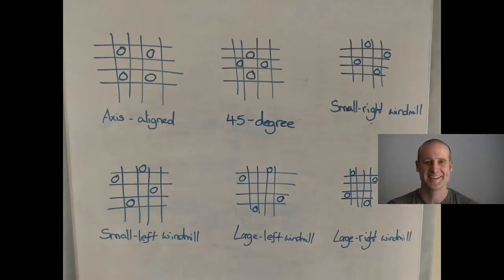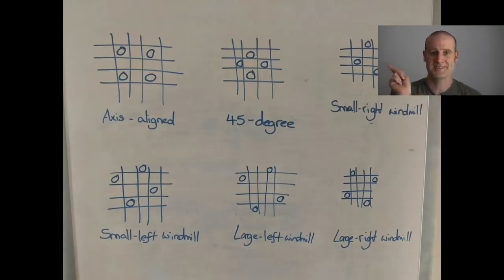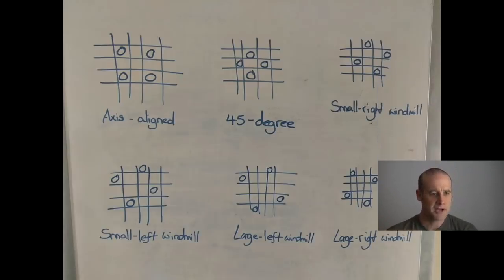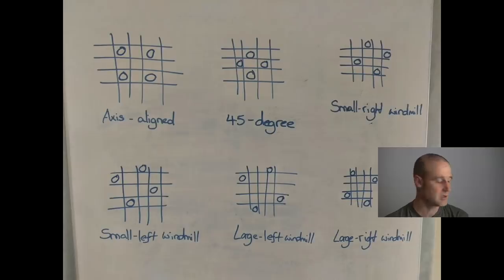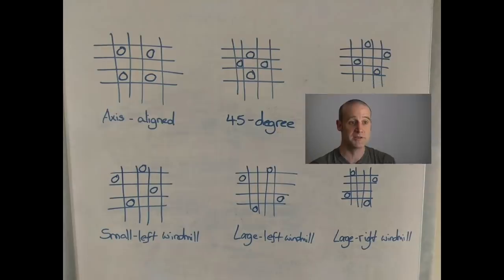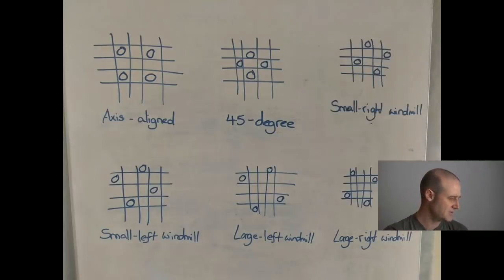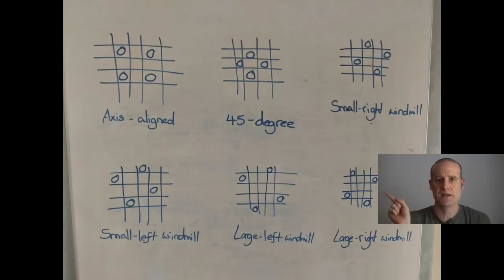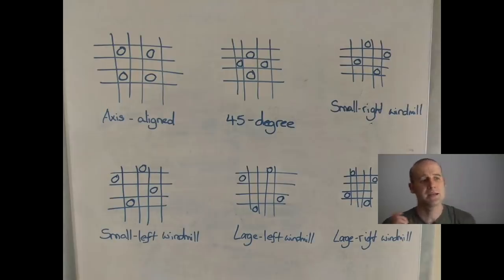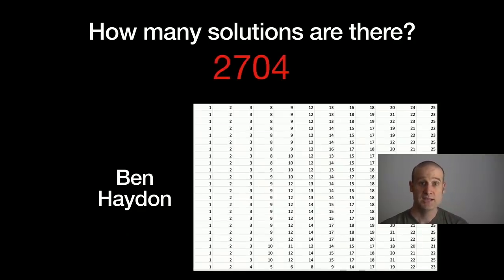Oliver gave names to all of these: you've got the axis-aligned ones, the 45-degree ones, and the windmills — the semi right windmill, the large right windmill — named by the direction you could imagine them turning if they were a square that got excited and moved to the side. We had 824 axis-aligned squares sent in by accident, 124 of the 45-degree ones, 571 small left windmills, 307 small right windmills, 73 large left ones, and 57 large right.